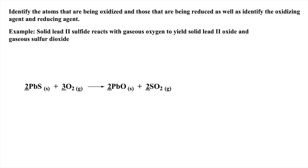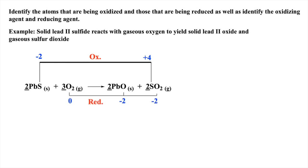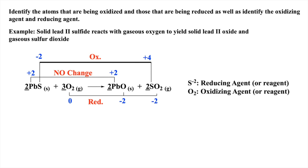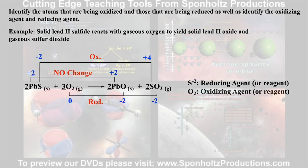Again, drawing from our nomenclature, the first step is to write the balanced equation. Then, examining how the oxidation states of sulfur change, we deduce it is being oxidized, and assigning the oxidation states to the oxygen atoms, we deduce they are being reduced. Interestingly, there is no change to the oxidation state of lead. Thus, sulfide is the reducing agent, and oxygen is the oxidizing agent.